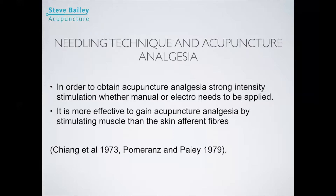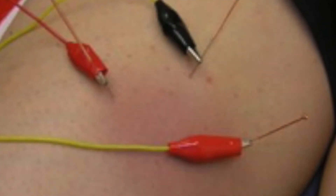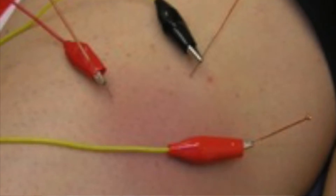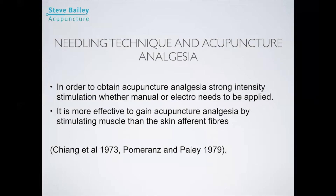If I'm wanting a segmental effect, I would stimulate slightly stronger — in the region of 100 hertz. That gives more of a segmental effect, releasing dynorphins into the spinal cord and serotonin into that region. It's a stronger stimulation, primarily by electro-acupuncture. So different types of needle stimulation are used in order to achieve your actual goal. Do think about the needling technique in order to achieve your acupuncture analgesia.